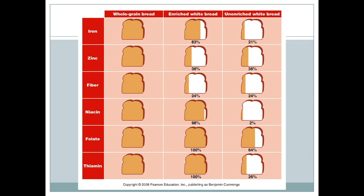Here is a diagram showing the relative content of various nutrients in whole grain bread versus enriched white bread versus unenriched white bread. For whole grain bread, all nutrients are present in plentiful quantities. Even in enriched bread you don't get as much iron, zinc, or fiber as you would from whole grain, though you probably will get plenty of B vitamins. Unenriched white bread has all of these things missing.